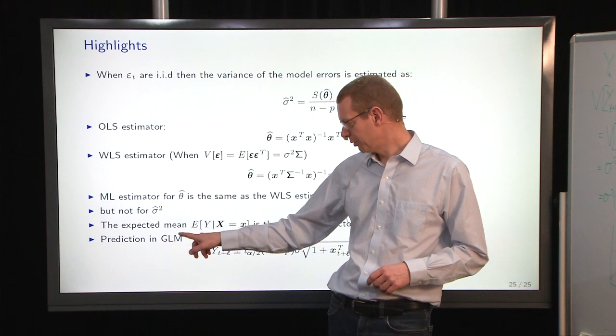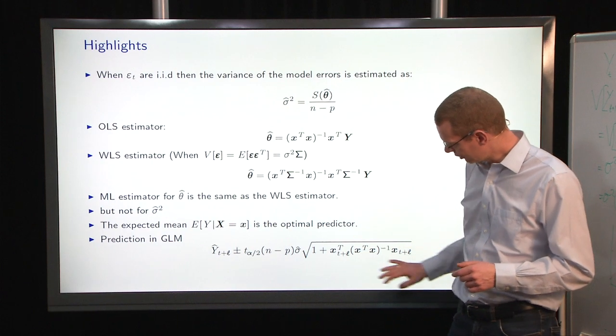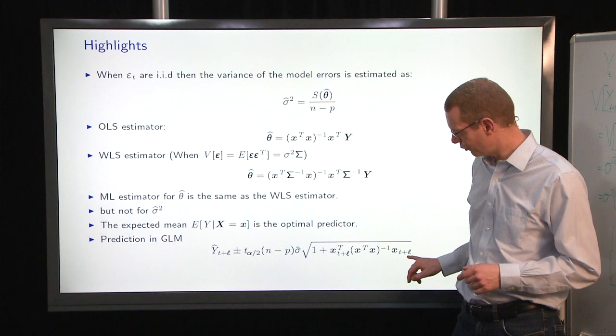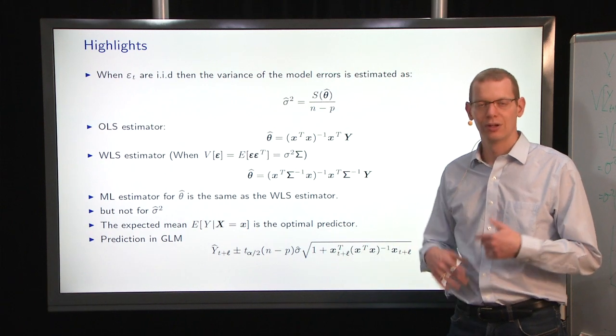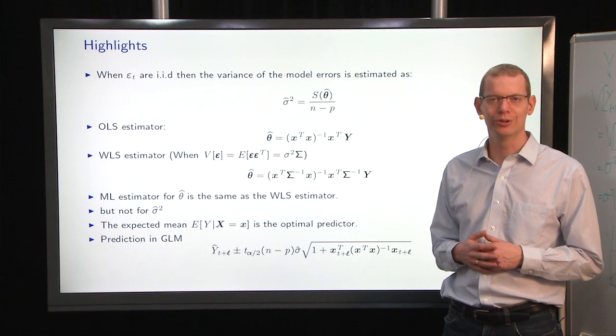So, finally, the conditional expectation is the optimal predictor, and when you do the predictions, you have to take care of the uncertainty that comes from the parameters. At least in practice, you don't know what the true values are, so that's what you have to do.